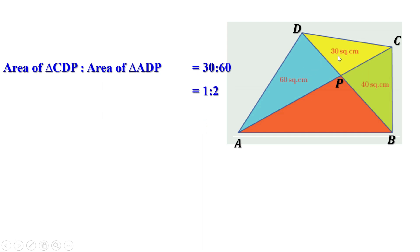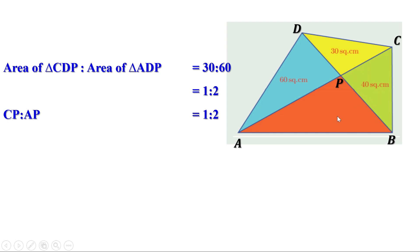Since the ratio between the areas of these two triangles is 1 to 2, the ratio between CP and AP is also 1 to 2. Now look at triangle ABC. BP is the line from vertex B to the opposite side AC, so it divides AC and the area of the triangle in the same ratio. We know the ratio of CP to AP is 1 to 2, therefore the ratio of the areas of these two triangles is also 1 to 2.